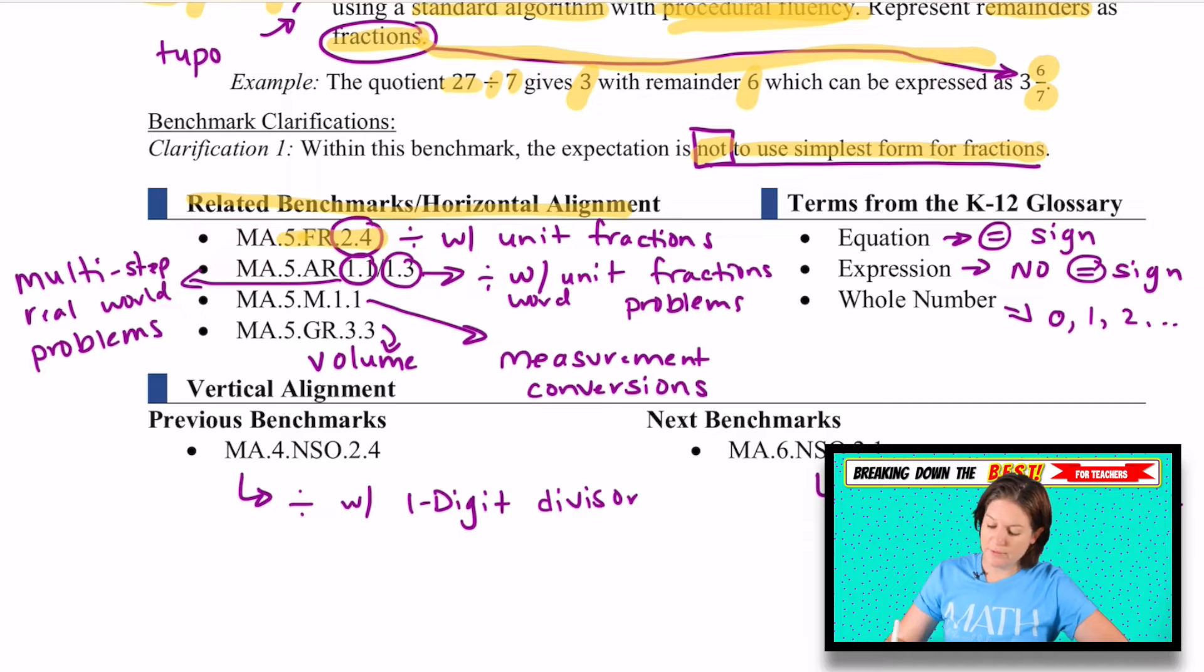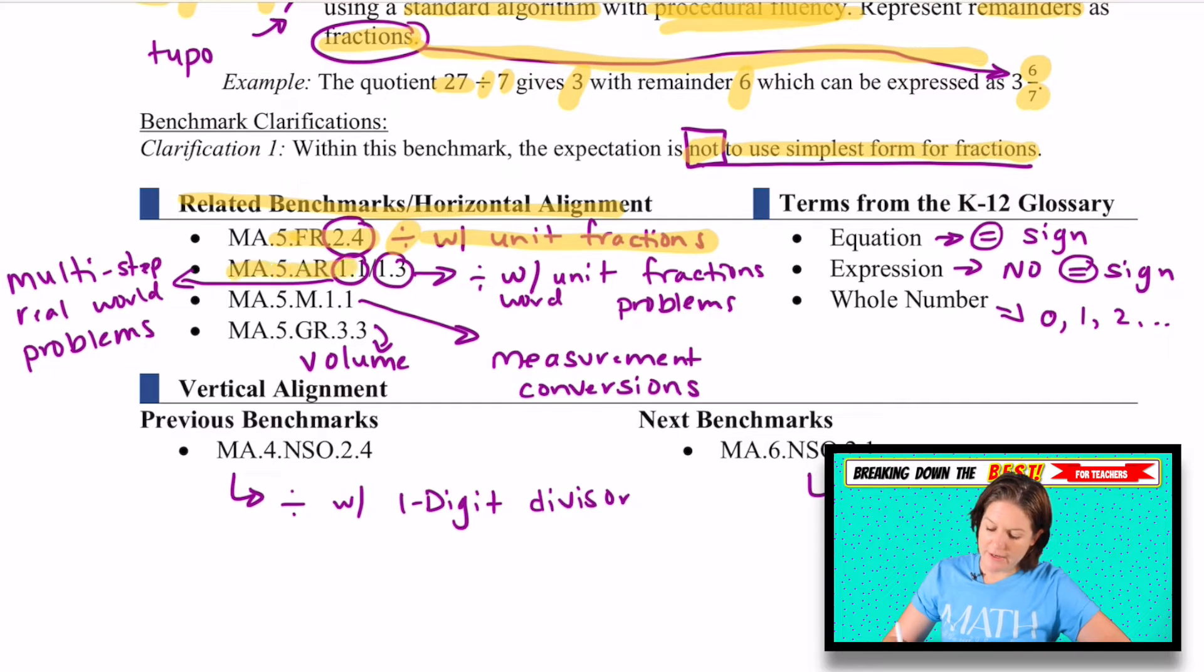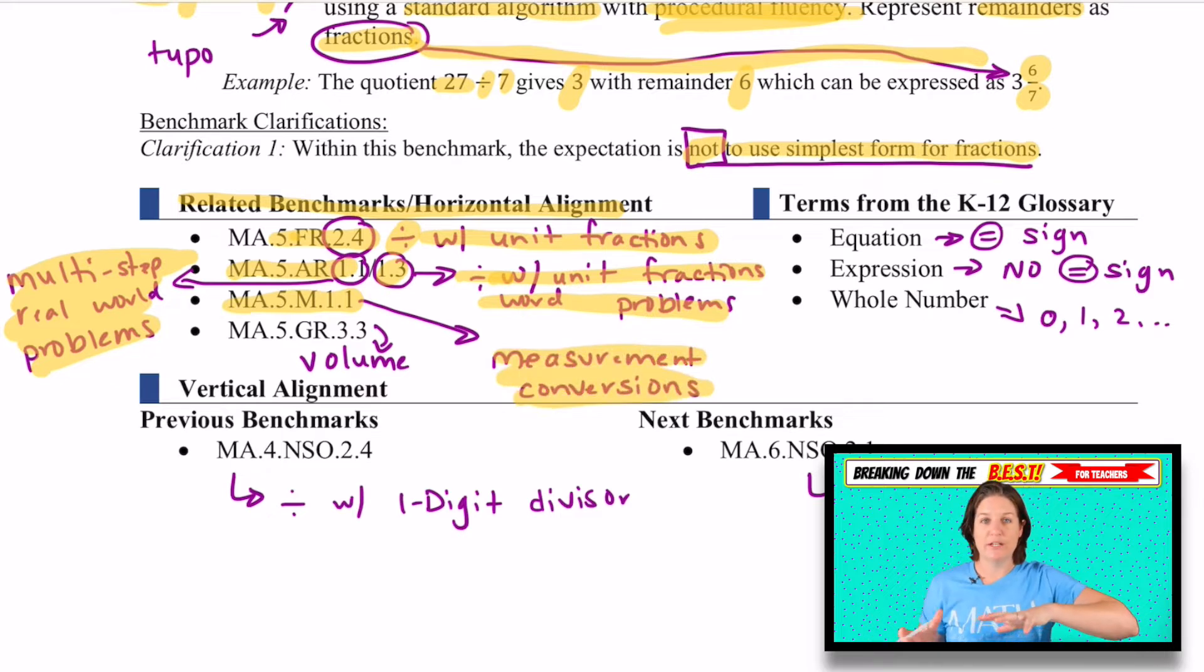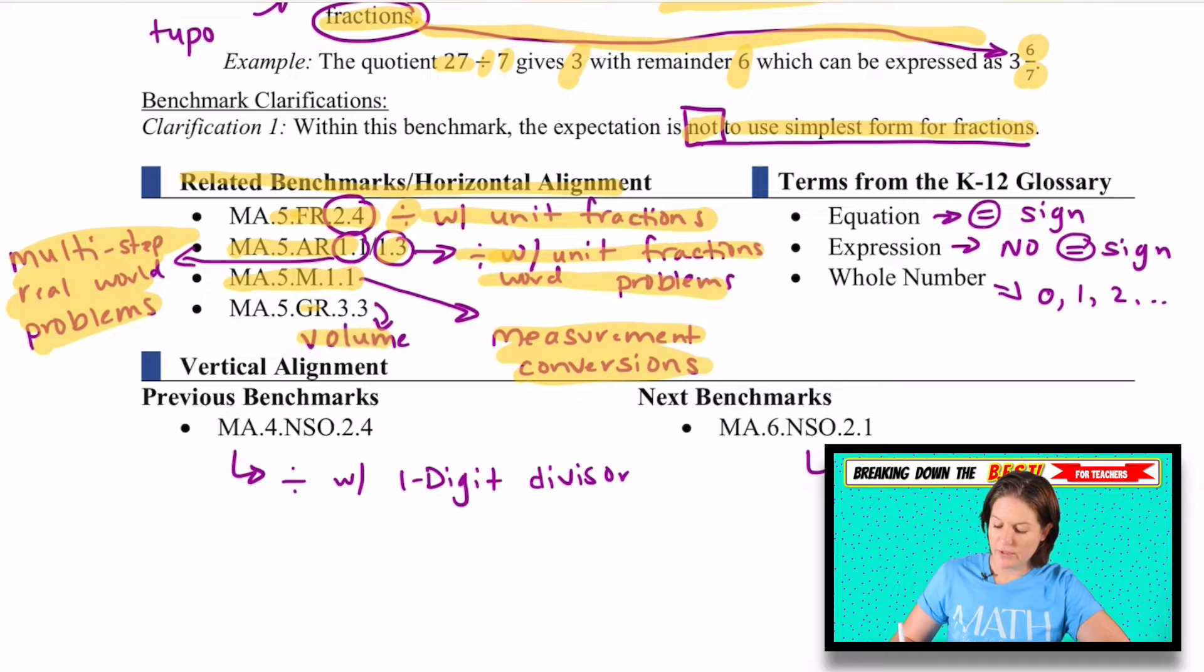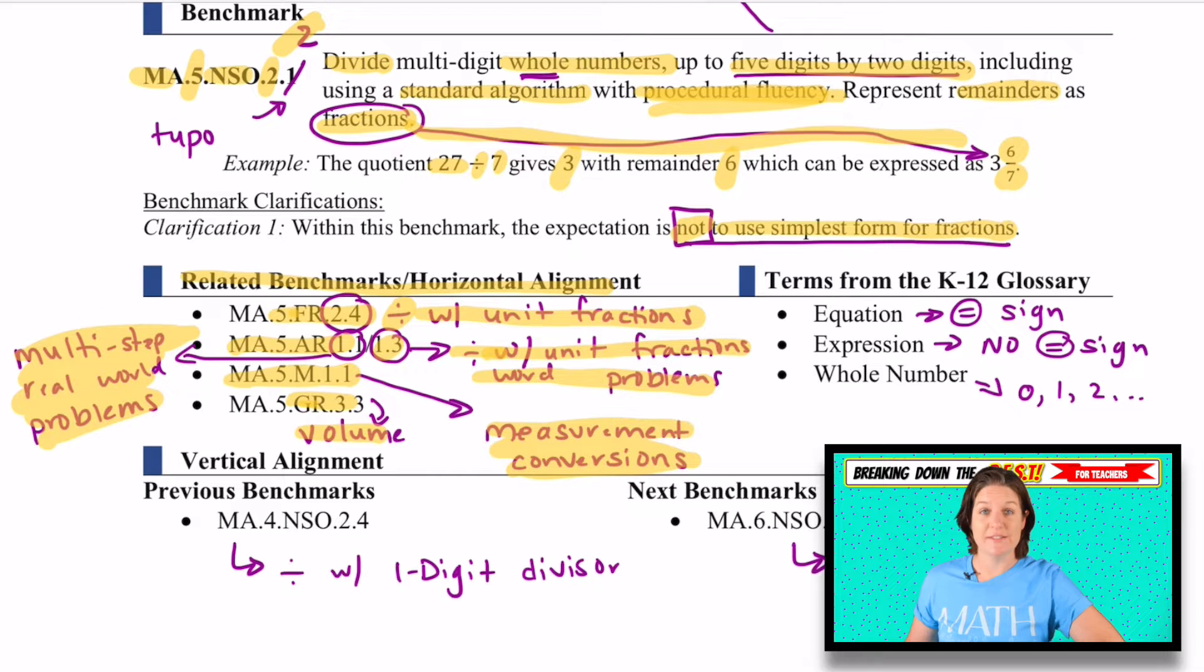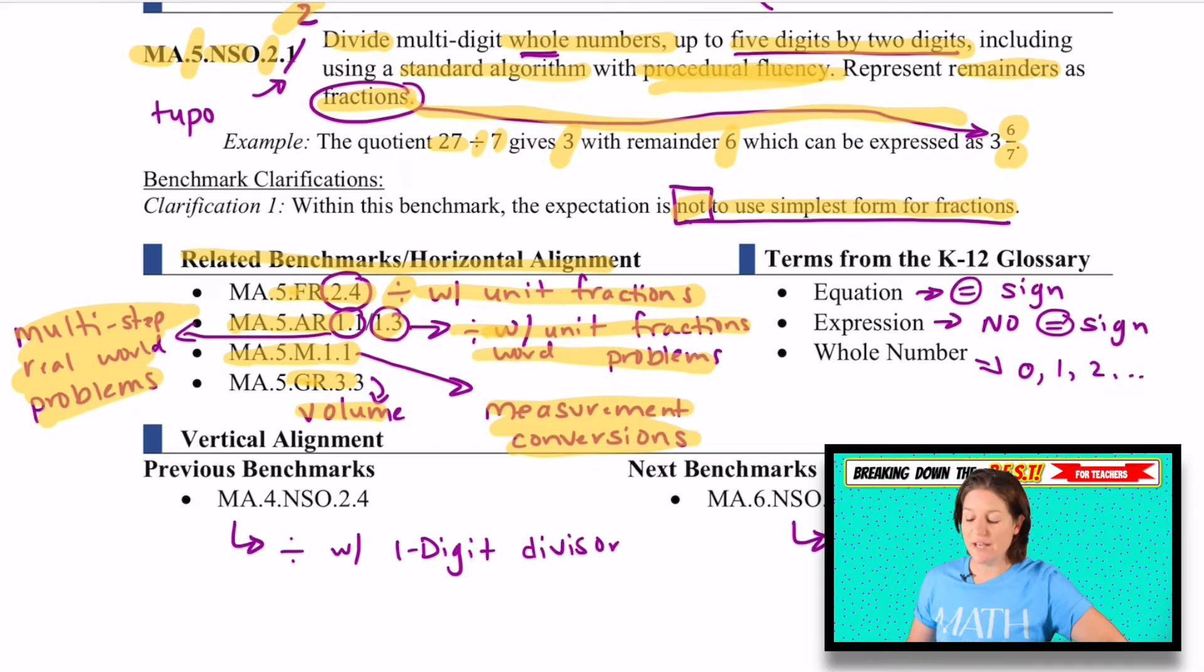For instance, 5.fr.2.4, we are dividing with unit fractions. So the division we learn here will apply to that. MA.5.AR.1.1 is multi-step real world problems with division. 1.3 in the AR strand is with division with the unit fractions with word problems. MA.5.M.1.2 is our measurement conversion standard. And we're either multiplying an amount to get a smaller unit or dividing to get the larger unit there. And then of course we have a volume standard where we might be given the total volume, but we have to figure out a missing side length. A missing dimension. So we definitely need them to be fluent in the standard to master the standard because it does help to align to other standards in fifth grade.